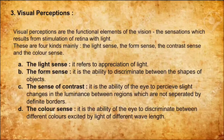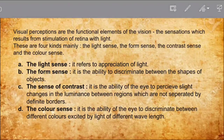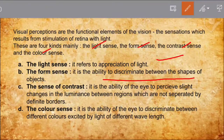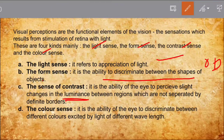The third is Visual Perception. Visual perceptions are the functional elements of vision — the sensations resulting from stimulation of the retina with light. These are of four kinds: the light sense, referring to the perception of light; the form sense, the ability to discriminate between shapes of objects such as circle or triangle; the contrast sense, the ability of the eye to perceive slight changes in luminance between regions not separated by definite borders; and the color sense, the ability of the eye to discriminate between different colors such as red, blue, and violet in different wavelengths.